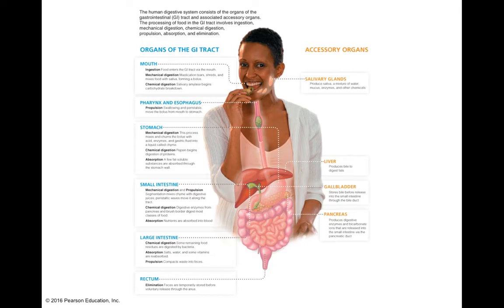Once in the stomach, we again have both mechanical and chemical digestion. Mechanical digestion involves churning and mixing in enzymes and gastric fluid. The bolus is now called chyme, and those enzymes are involved in chemical digestion. Specifically, we have an enzyme called pepsin which breaks down proteins. We also begin the process of absorption — the transfer of biomolecules across the membrane into the bloodstream.